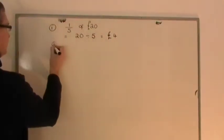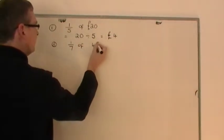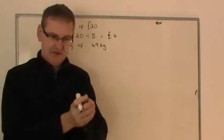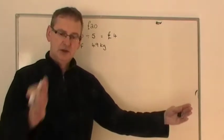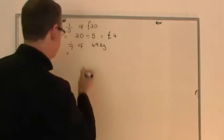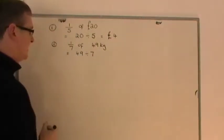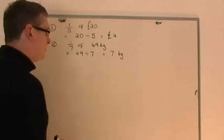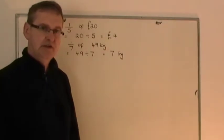Likewise, if you have one-seventh of 49 kilograms, you imagine the 49 kilograms set out in a long line, and for one-seventh of it, you just chop or share it into seven equal portions. So you take the 49 and share by seven. The answer is seven kilograms — you'd have seven kilograms in each portion. And it's as simple as that.